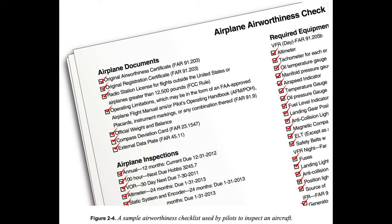4) Operating Limitations, which may be in the form of an FAA-approved AFM/POH, placards, instrument markings, or any combination thereof (14 CFR Part 91, Section 91.9); 5) current Weight and Balance Data; 6) Compass Correction Card, if required under applicable airworthiness standards; and 7) External Data Plate (14 CFR Part 45, Section 45.11).